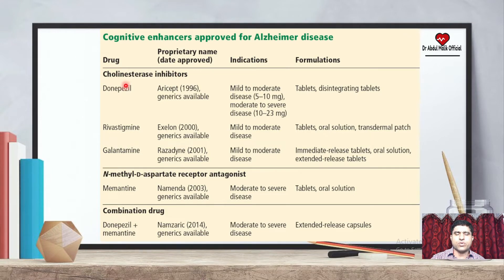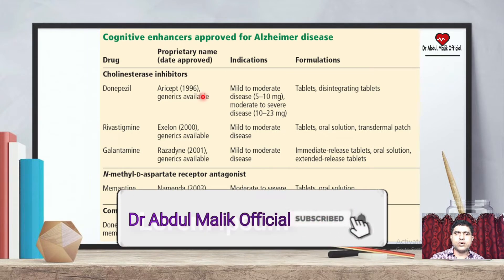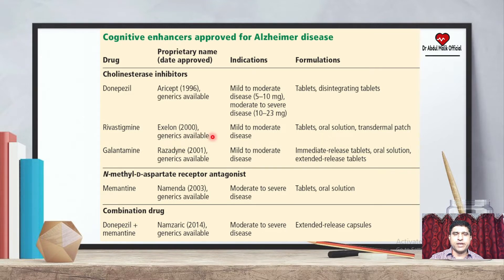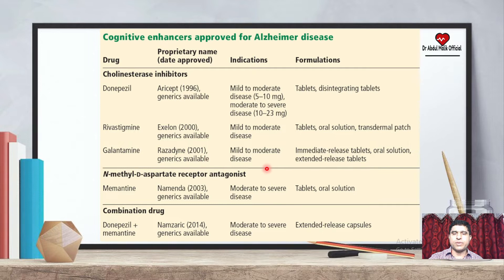Their combination is the cognitive enhancer regimen for Alzheimer's disease. Cholinesterase inhibitors were discovered in 1996. For mild to moderate disease: 5 to 10 mg; for moderate to severe disease: 10 to 23 mg. Disintegrating tablets are available. Rivastigmine (Exelon), discovered in 2000, is available for mild to moderate disease as tablets, oral solution, and transdermal patches. Galantamine (Razadyne), discovered in 2001, is available for mild to moderate disease as immediate release tablets, oral solution, and extended release tablets.